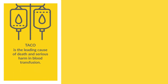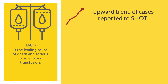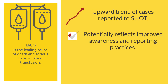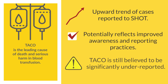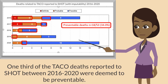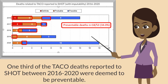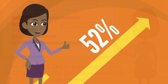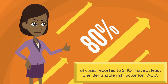TACO is the leading cause of death and serious harm in blood transfusion. There has been an upward trend of cases reported, which probably reflects improved awareness and reporting practices, though TACO is still believed to be significantly underreported. One third of TACO deaths reported to SHOT between 2016 and 2020 were deemed preventable, and around 80% of cases have at least one identifiable risk factor for TACO.